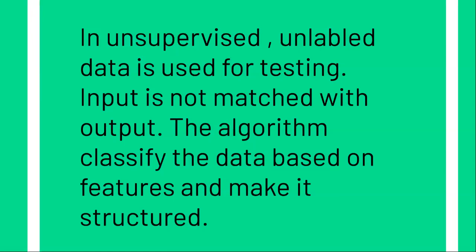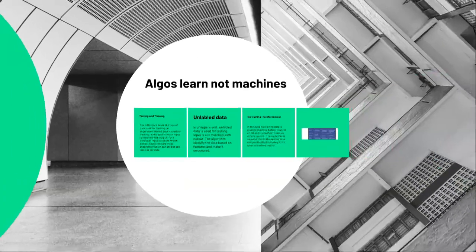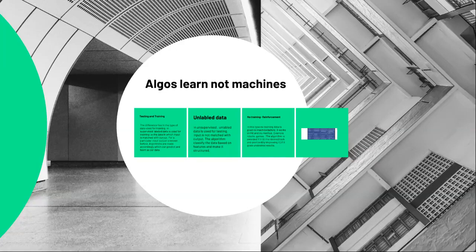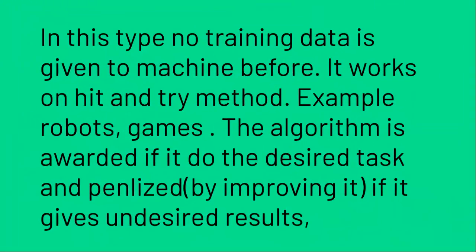Now we see the third category, known as reinforcement learning. In reinforcement learning, we do not give any data. Supervised learning gave labeled data, unsupervised learning gave unlabeled data, but in reinforcement learning no data is input to the machine during training. It works on a hit-and-try method. For example, robots and games — we design video games and train the machine by playing the game.